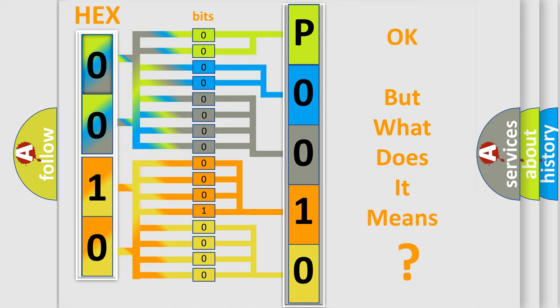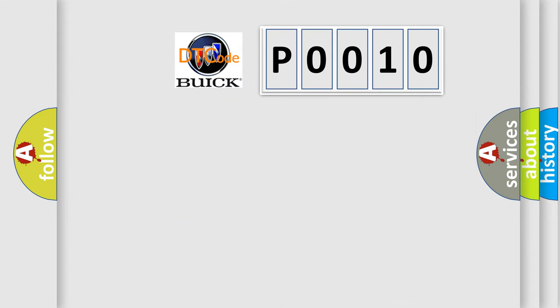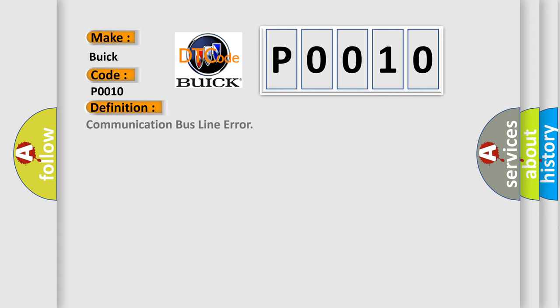The number itself does not make sense to us if we cannot assign information about what it actually expresses. So, what does the diagnostic trouble code P0010 interpret specifically for Buick car manufacturers? The basic definition is: Communication bus line error. Here is a short description of this DTC code.